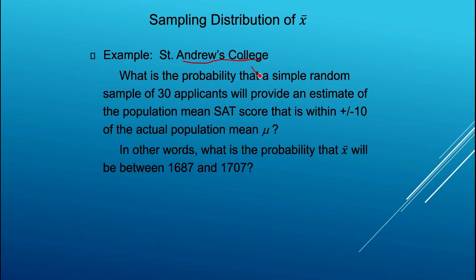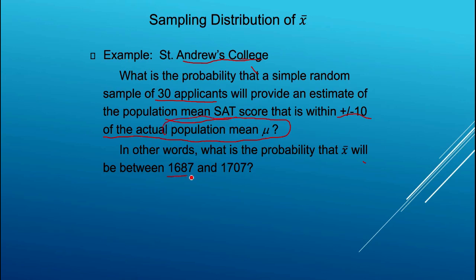Starting with the sampling distribution of the mean: every time we pull a sample of size 30 from this incoming class and calculate their average SAT score, we get a slightly different answer. So the average SAT score from a sample of size 30 is a random variable. We're going to answer: if I take a sample of size 30, what proportion of the time will I come within plus or minus 10 points of the actual population mean μ, which we know is 1697 — so between 1687 and 1707.